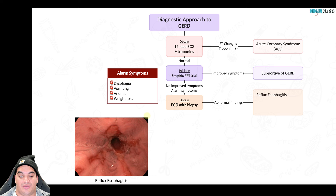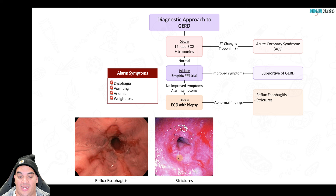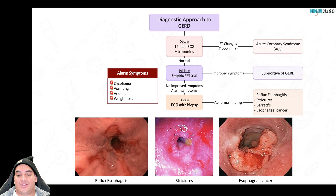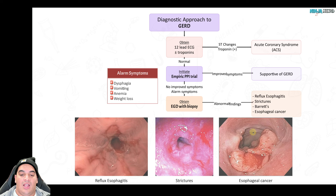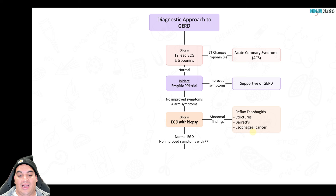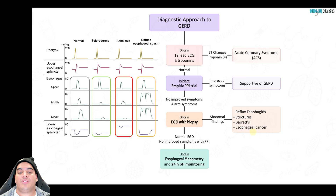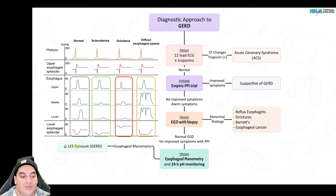If any alarm symptoms are present, get an EGD with biopsy to check for esophagitis, strictures, or cancer. If the EGD is normal and the patient hasn't improved with the empiric PPI trial, get esophageal manometry to rule out an esophageal motility disorder. If the LES tone is reduced but mid-distal tone is normal, it's likely GERD.